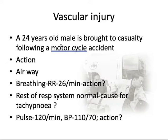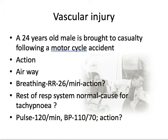A young male is brought in after a motorcycle accident. You check his airway — he was talking, so he was okay — but he had tachypnea. The action is to start oxygen by mask and perform a complete respiratory system examination to exclude a cause for tachypnea within the lungs, especially hemothorax, pneumothorax, flail chest, or lung contusion. The respiratory system examination is normal, so tachypnea is not due to a problem within the breathing.